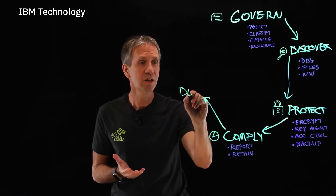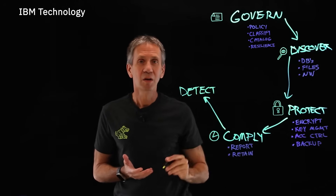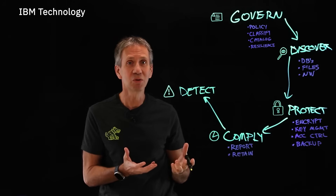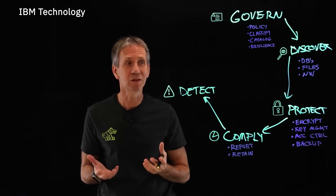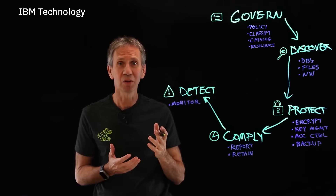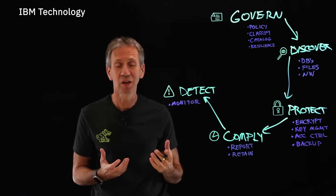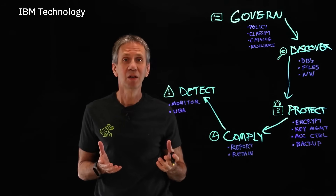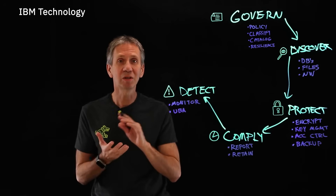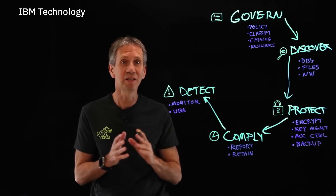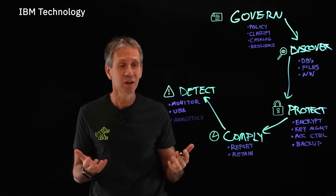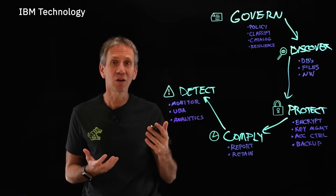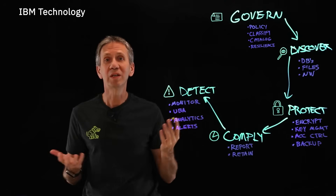Then I need an ability to detect. Do I have a problem? Is someone using or misusing the data in a way that I didn't expect or that is unapproved? I need a monitoring capability that lets me know when that's the case. User behavior analytics is an example of a technology that looks at when users are using data in anomalous ways and deviate from the norm — that would be a good trigger point. Using analytics is another way of doing this kind of analysis, and then ultimately alerts that tell someone we need to take action.